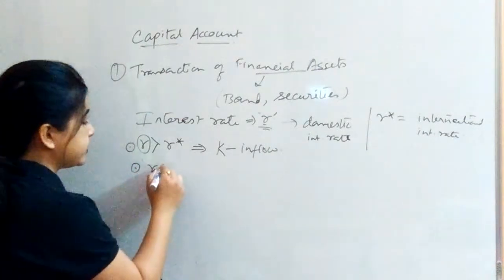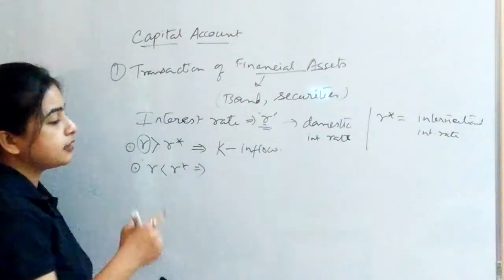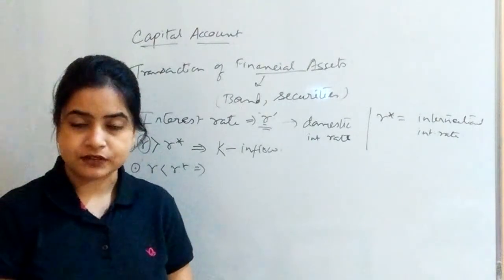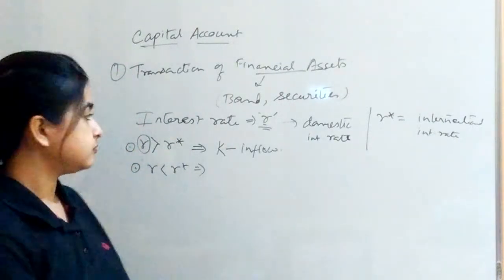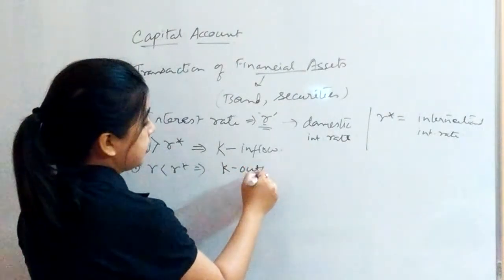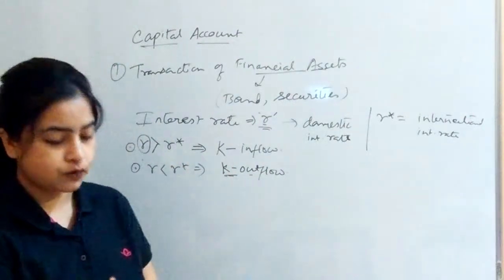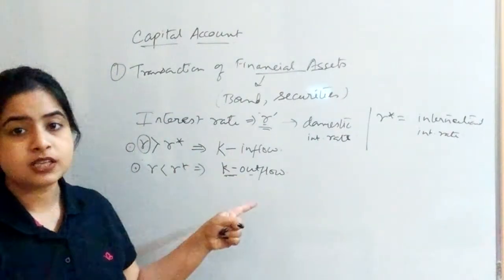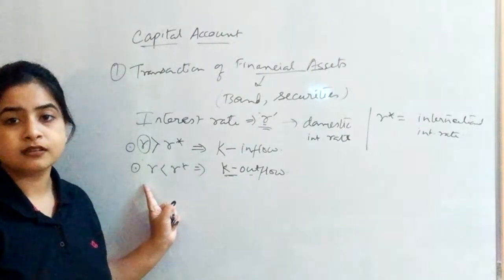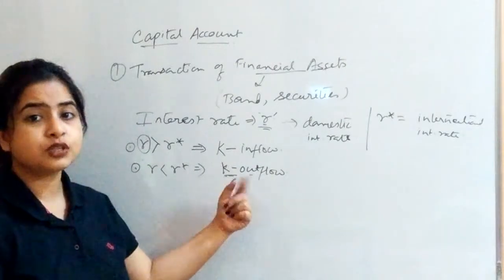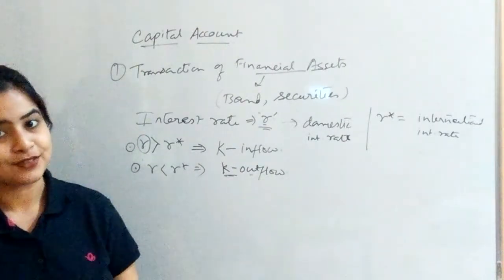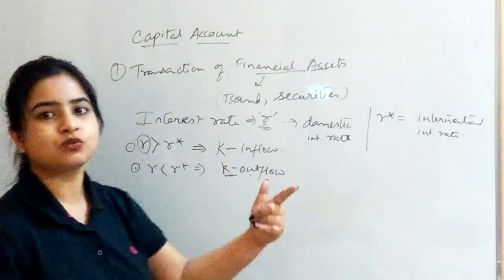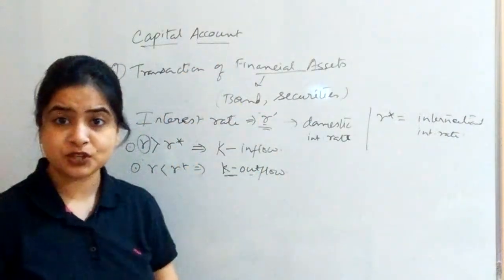Similarly, if r is less than r*, investors will not be investing in our country — they will prefer foreign countries where the interest rate is higher. Even domestic investors will not be interested in investing at home because the world rate of interest is higher. This leads to capital outflow, and if capital outflow is ongoing, the capital account is depreciating — it is reducing.